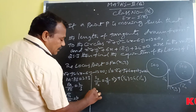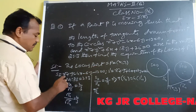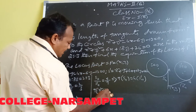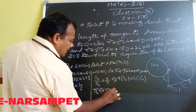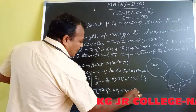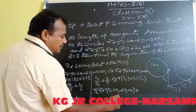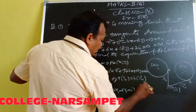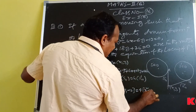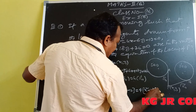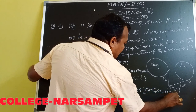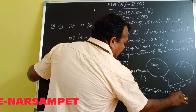Substituting all values: 9·S11 gives 9x1² + 9y1² - 36x1 - 54y1 - 108, and 4·S'11 gives 4x1² + 4y1² + 24x1 + 72y1 + 104.